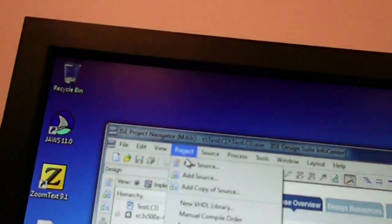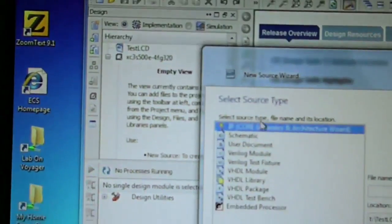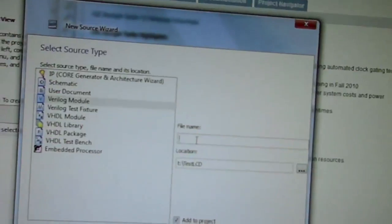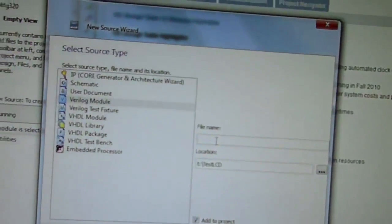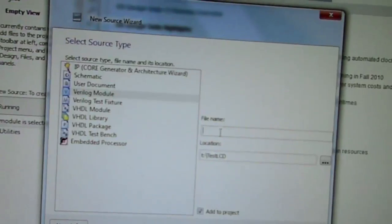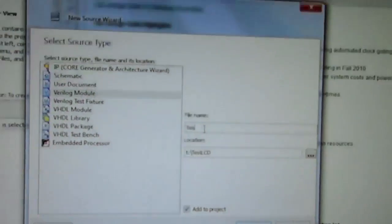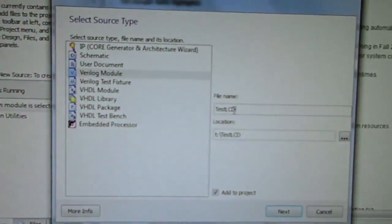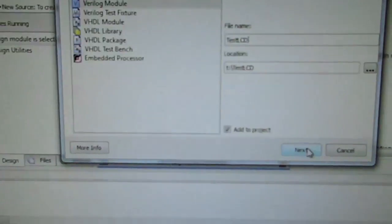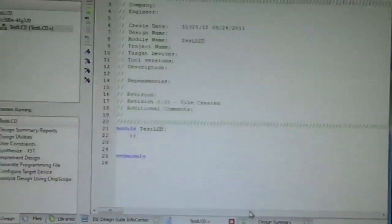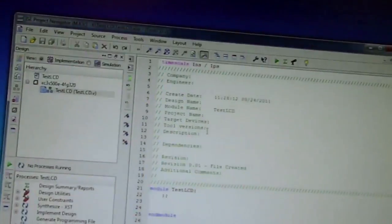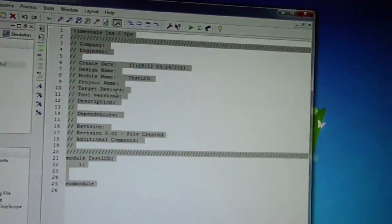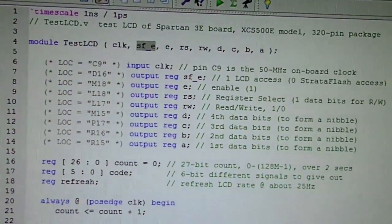Pick project, new source, new source code, and a Verilog module. Call it the same name, test LCD. You're going to just paste in the source code, module test LCD.